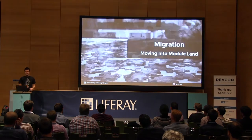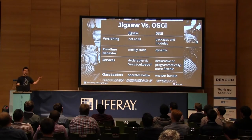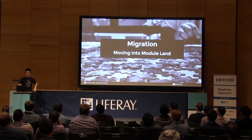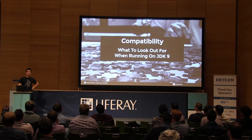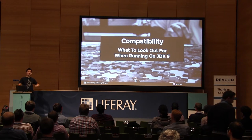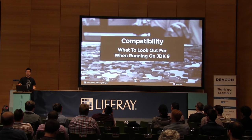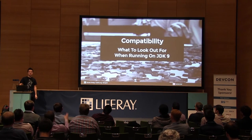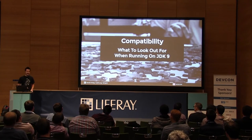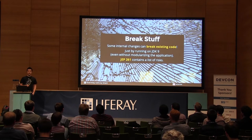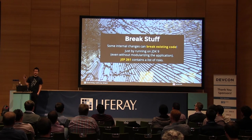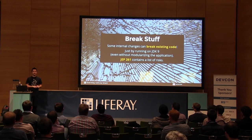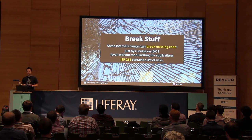I've got seven minutes left and two topics. The audience voted for compatibility. Good news — your code can break even though you don't do any modularization. I said earlier you can just take your code, put it on the class path, and it just works. That's true, unless you do stuff you shouldn't be doing, in which case it breaks regardless of whether you modularize your own code. There are a couple of things that can go wrong, and I want to hurry through them.